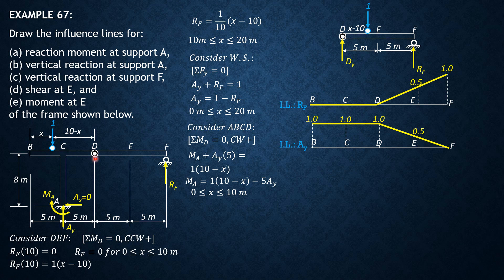Beyond 10 meters (beyond D), the unit load is no longer part of this free body diagram, so we remove its moment contribution. The equation becomes MA = −5·Ay for 10 ≤ x ≤ 20 meters.